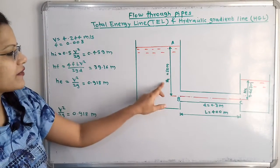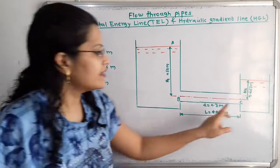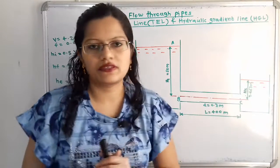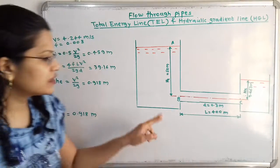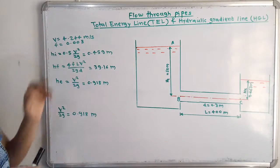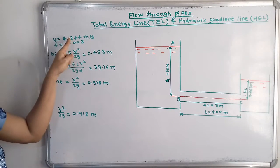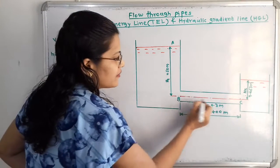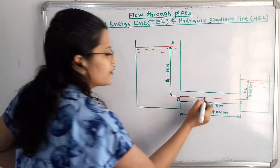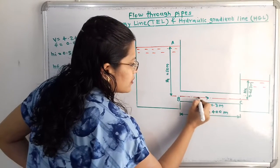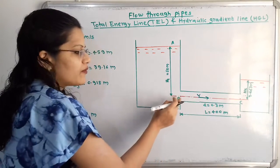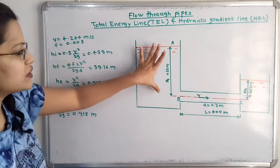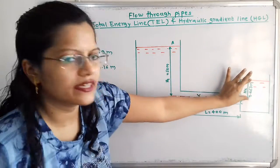For tank 1, H1 is equal to 50 meters, and for tank 2, H2 is equal to 9.463 meters. The velocity of water flowing through this pipe is V equal to 2.44 meters per second. The direction of flow of water is towards the right-hand side because H1 is greater than H2.